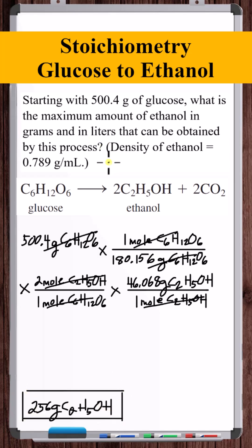To get liters of ethanol, we see that the density of ethanol is 0.789 grams per milliliter. There's a thousand milliliters in one liter.